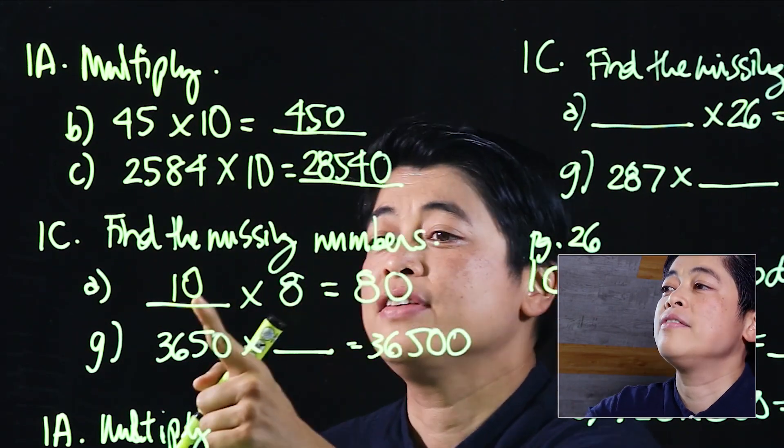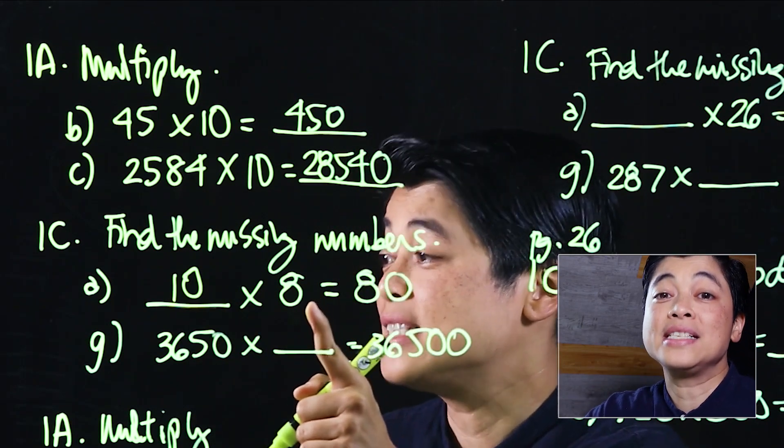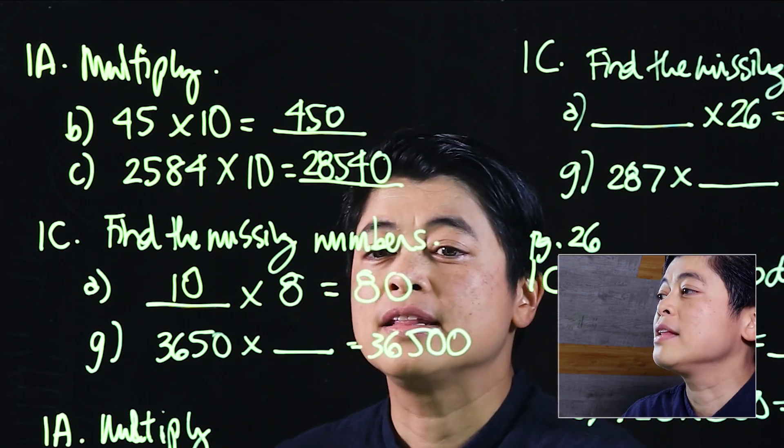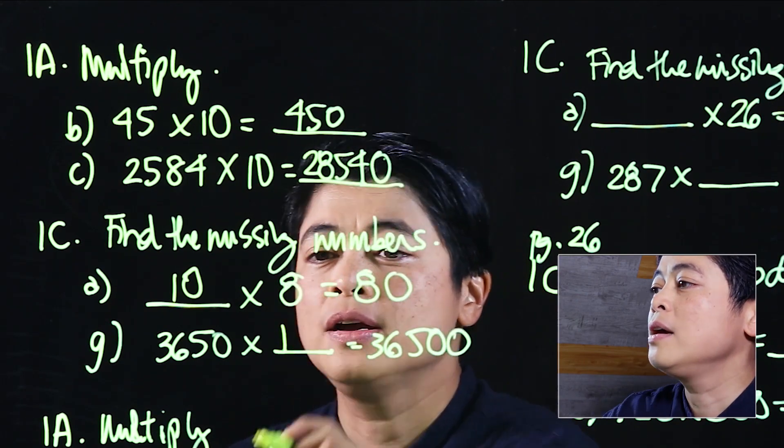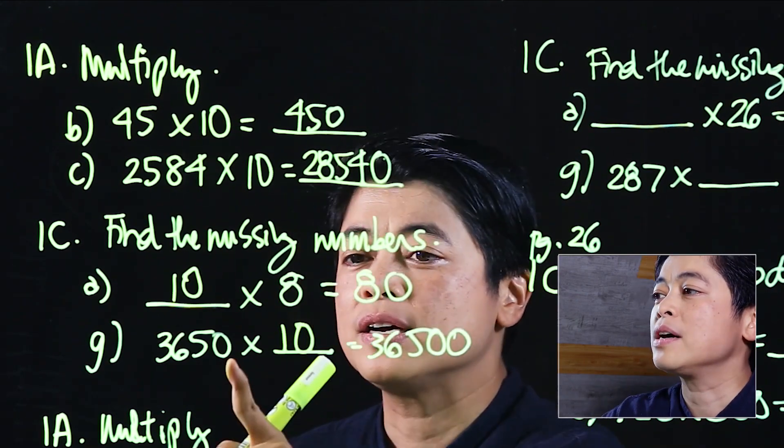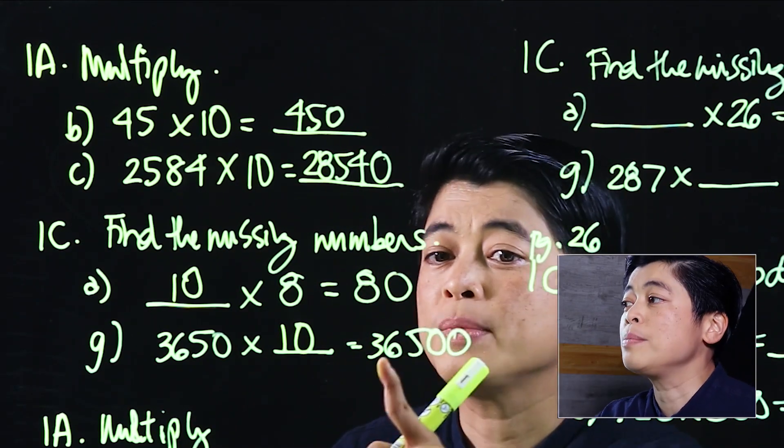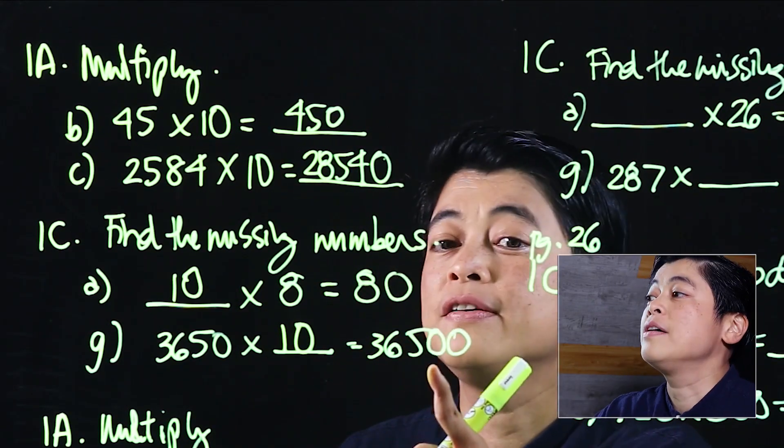Here, what's missing is: something times 8 equals 80, so clearly this must be 10. Because if I have 10, all I have to do is add a zero. Similarly here, this must be 10, because this already has one zero and needs a second zero to make it 36,500.